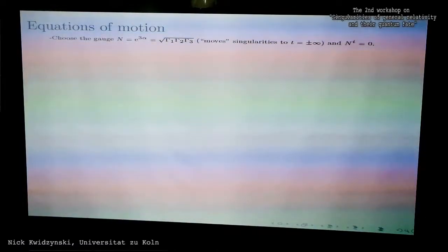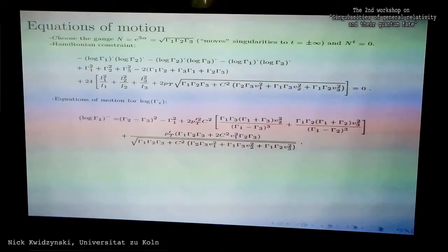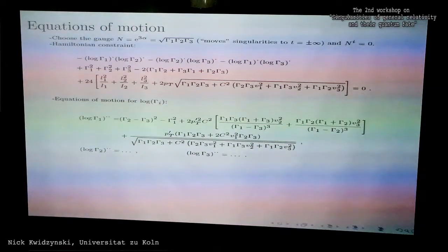Let me show you the equations of motion. In order to do some numerics with this model, I choose the following gauge: I gauge n to be e to the three alpha. This is necessary to move the singularity to t equals plus or minus infinity, such that we can resolve all the BKL oscillations which we expect to see in this model. We also set the shift vectors to be zero and I express the Hamiltonian constraint in terms of the gamma variables. The reason I do this is that the gamma variables in the numerical simulation turned out to give better control of the error in the Hamiltonian constraint. This is how the equations of motion for log gamma look, and the equations for log gamma 2 and log gamma 3 look similar.